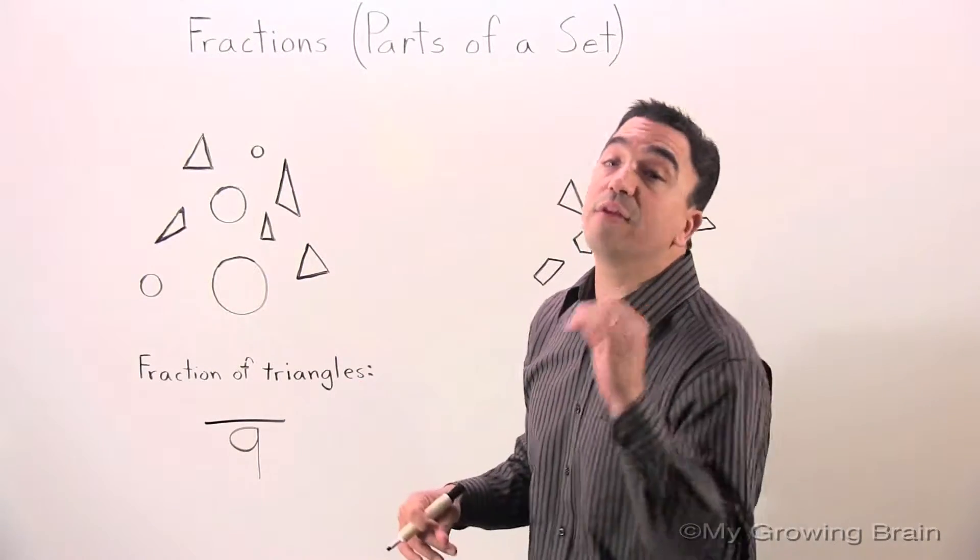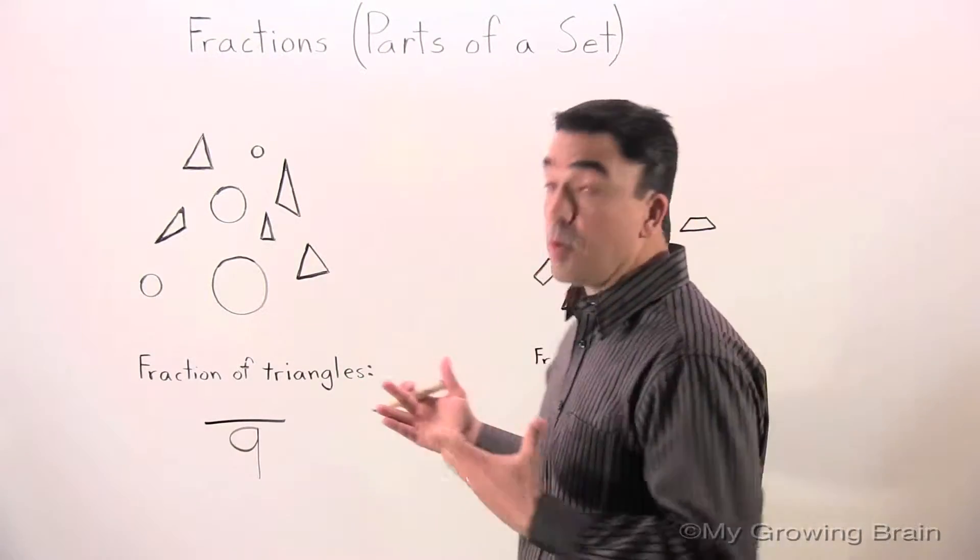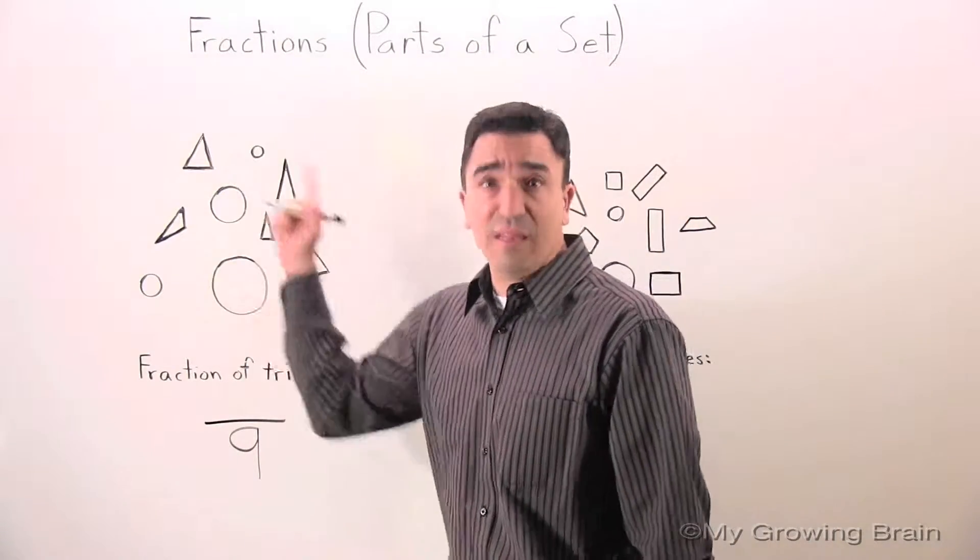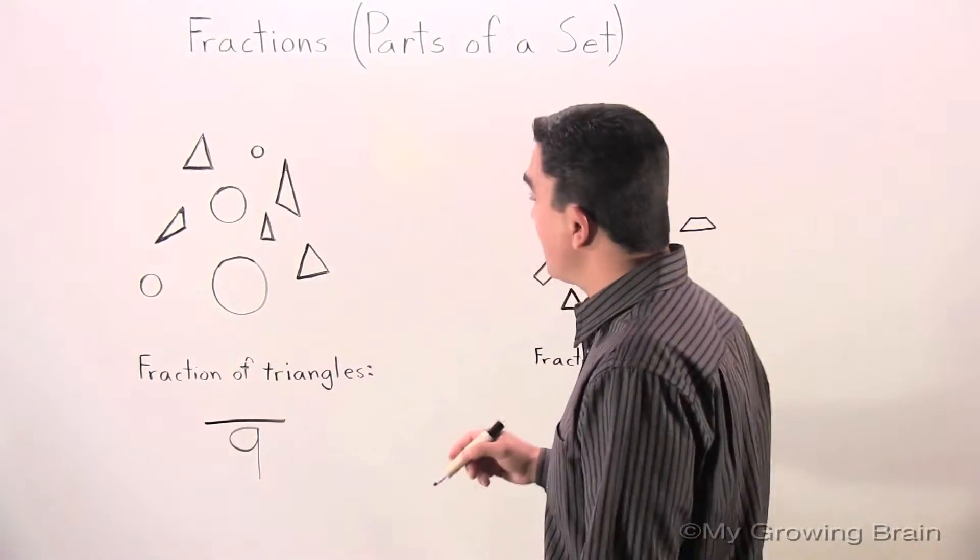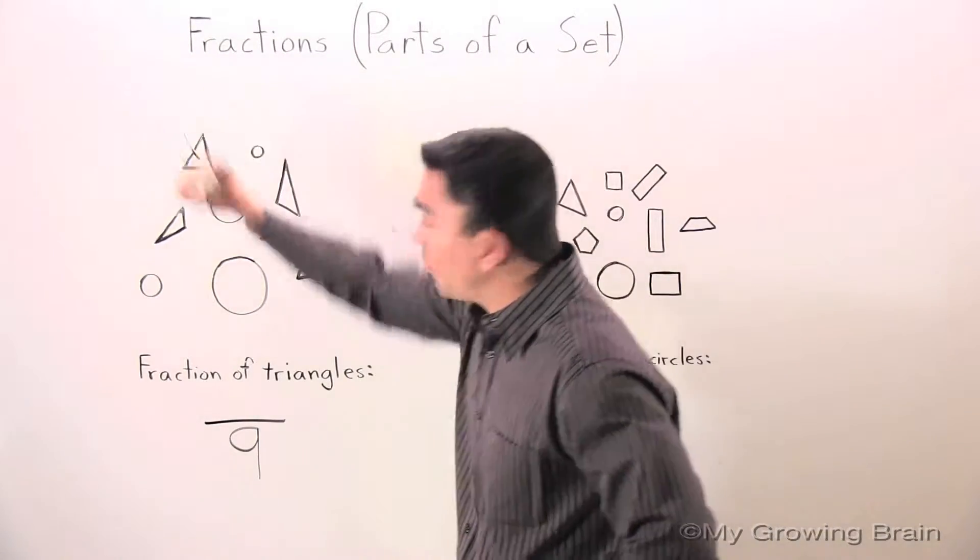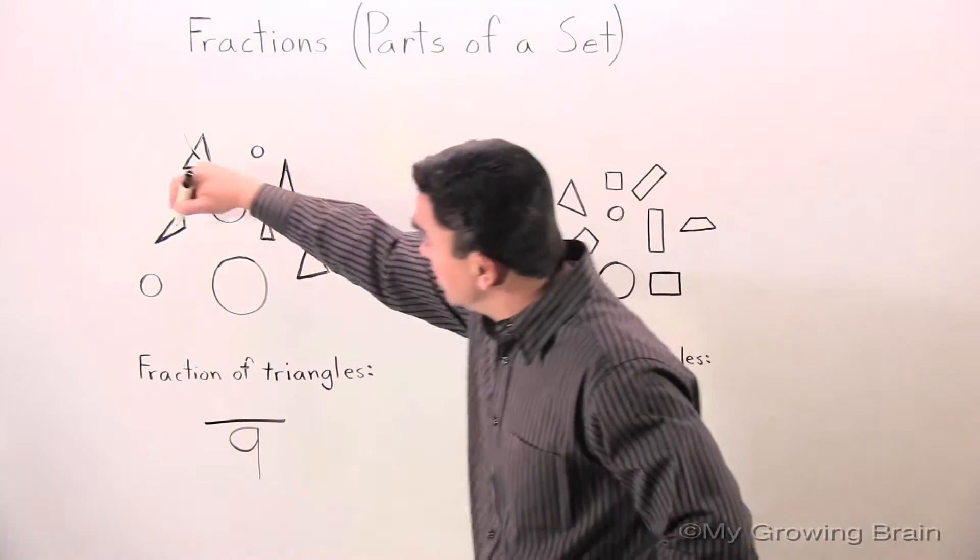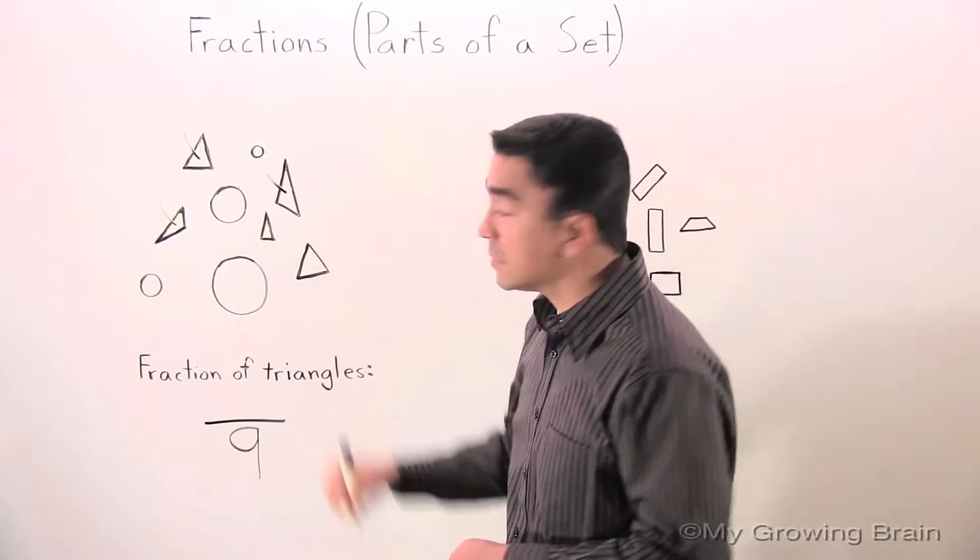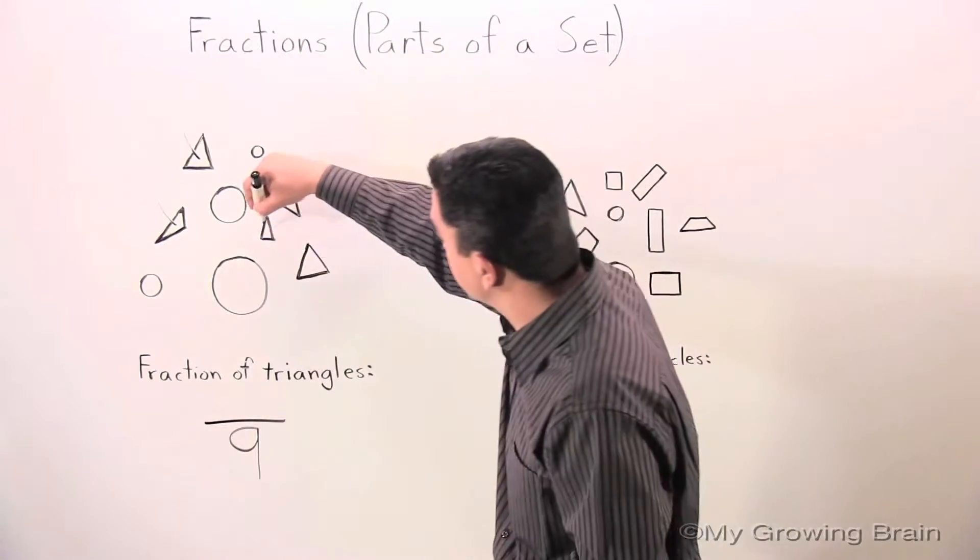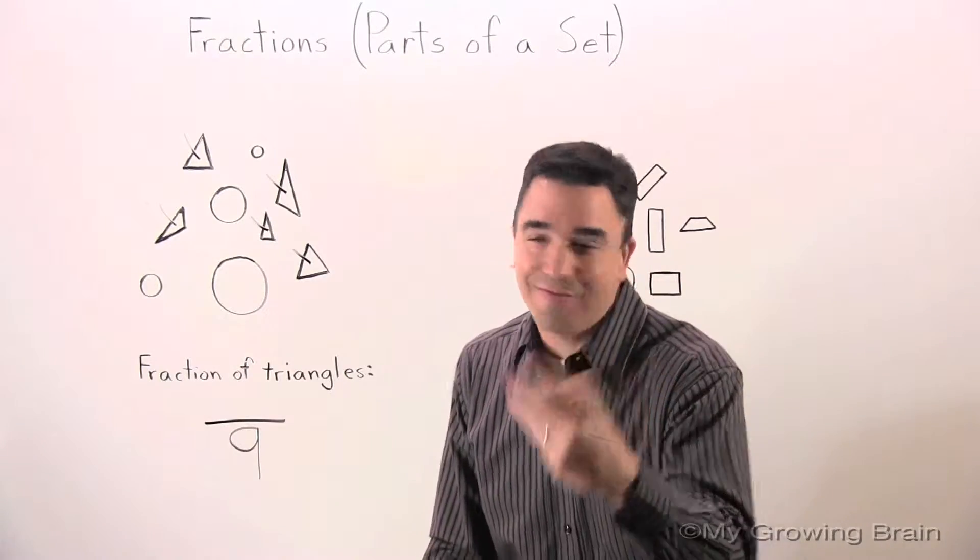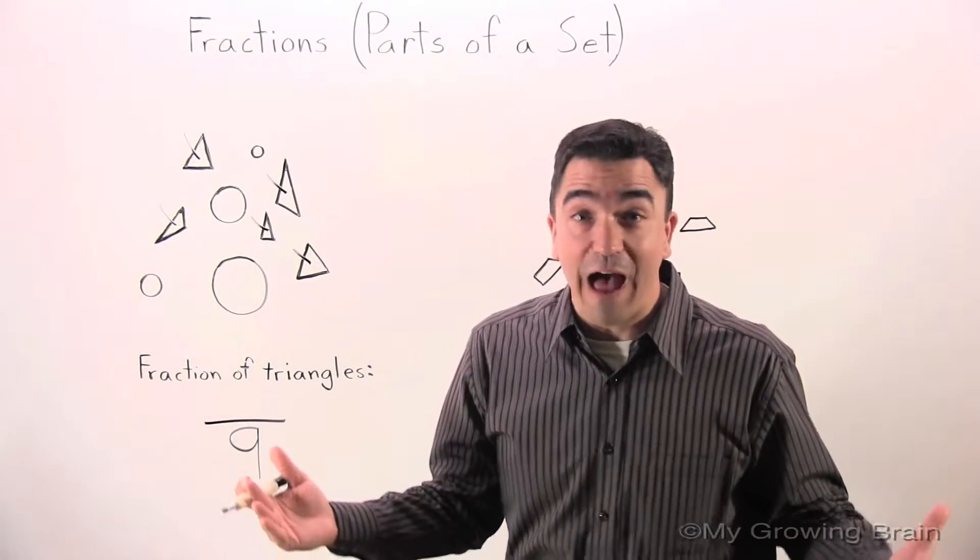Now, we're going to find the numerator. The numerator is the total number of triangles in the set. Well, that's 1, 2, 3, 4, 5. The numerator is 5.